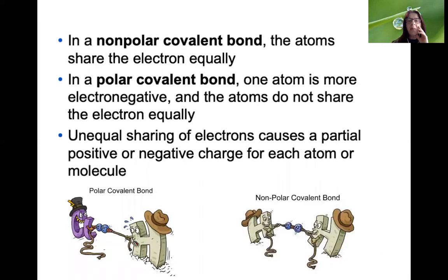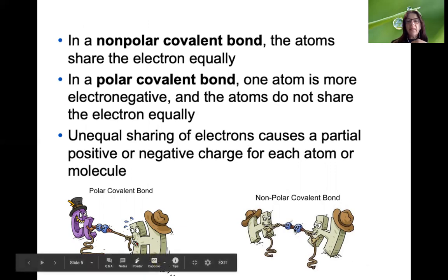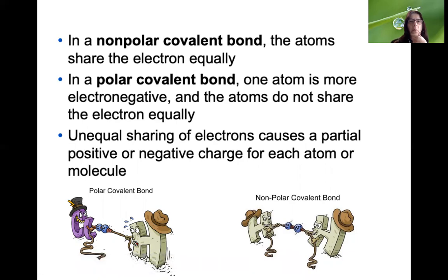In a non-polar covalent bond, the atoms share electrons equally — it's like a tug-of-war where both atoms are equidistant. In a polar covalent bond, the tug-of-war is won by one atom because that atom is more electronegative, so the atoms do not share electrons equally. The unequal sharing of electrons causes partial positive and partial negative charges for each atom, because electrons are negatively charged and the protons in the nucleus are positively charged.